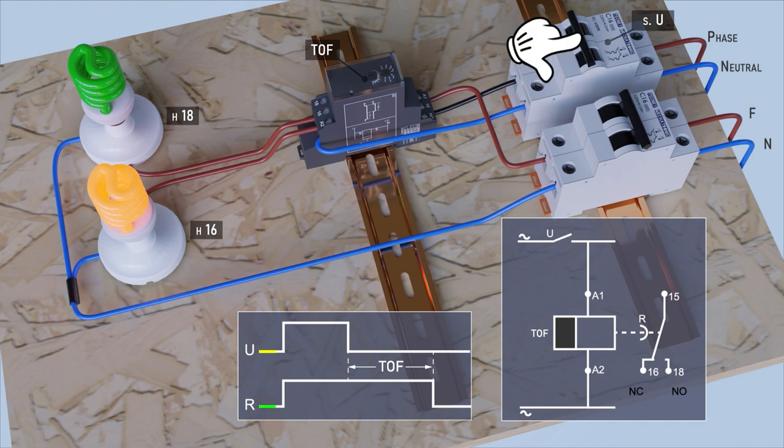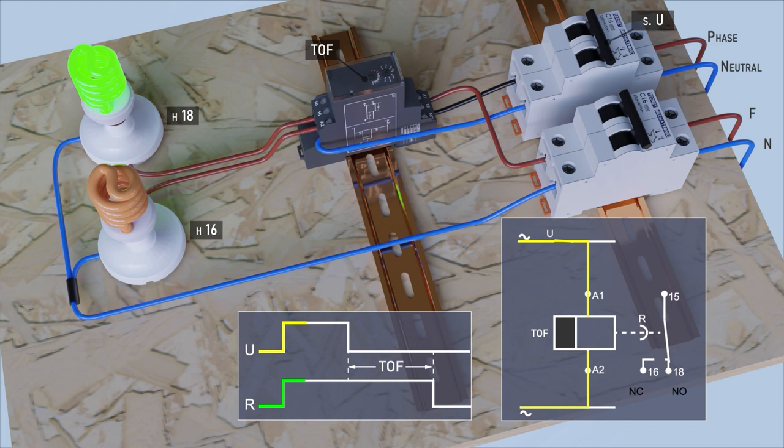Now, if we close the switch U to energize the timer coil, its contacts immediately switch, thus allowing the green bulb that is connected to terminal 18 to light.